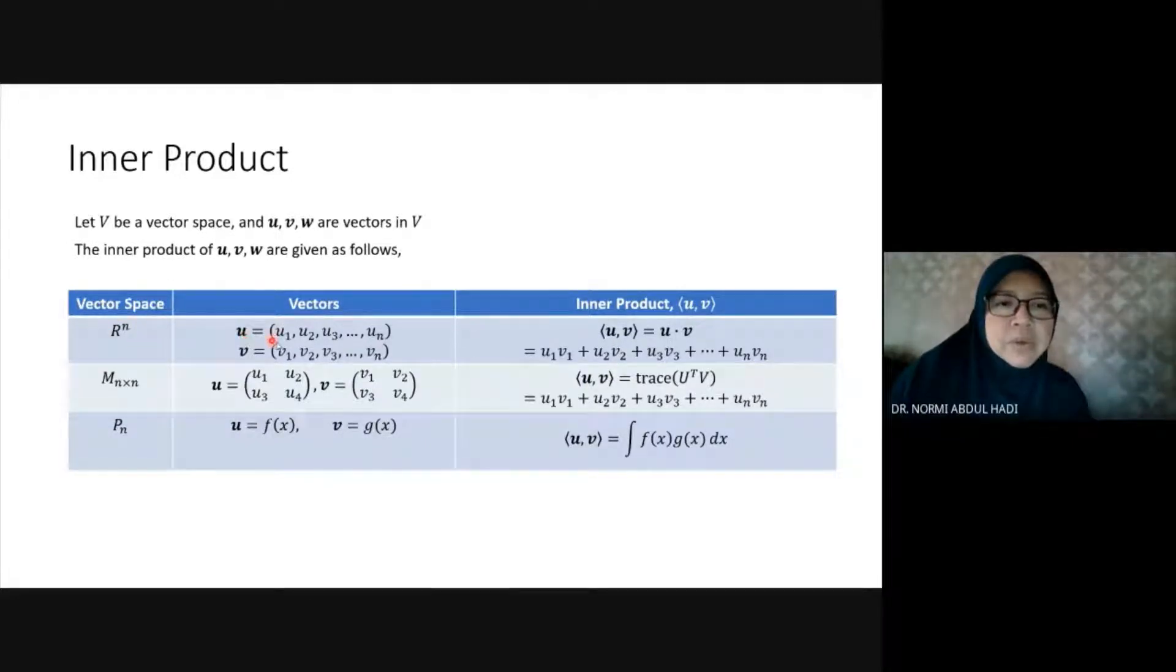...is Rn: vector u = (u1, u2, u3, ..., un) and vector v = (v1, v2, v3, ..., vn). For example, u = (u1, u2, u3, u4) and v = (v1, v2, v3, v4).